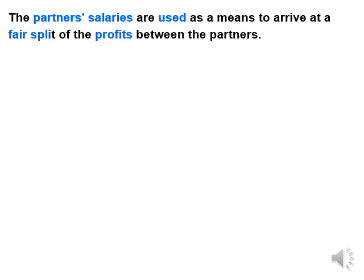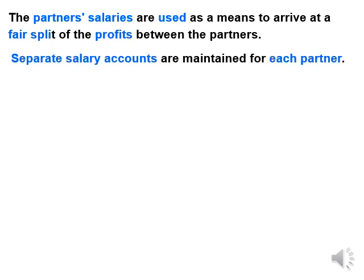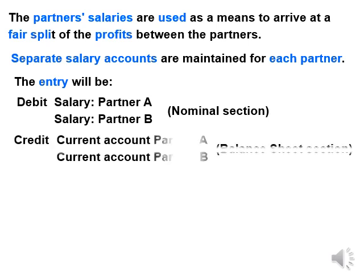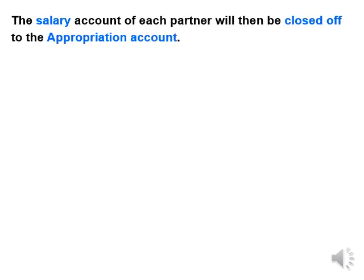The partner's salaries are used as a means to arrive at a fair split of the profits between the partners. Separate salary accounts are maintained for each partner. The entry will be to debit the salary account of each partner, which will be in the nominal account section, and to credit the current account of each partner, which will be in the balance sheet section. The salary account of each partner will then be closed off to the appropriation account.